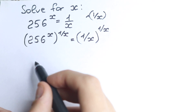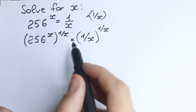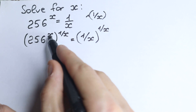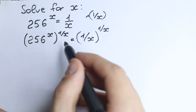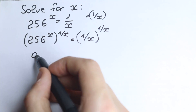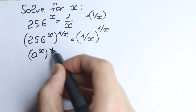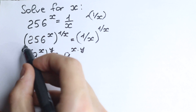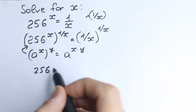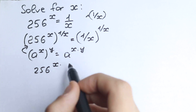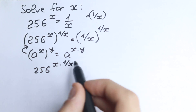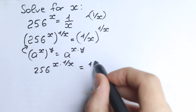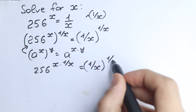Nothing changed because we raised both sides equally, but it's really important — take a look closely. We have a complicated expression because we have x raised to the power 1 over x. If you know the rule: a to the power x, raised to the power y, equals a to the power x times y — we apply that rule here. So we have 256 to the power x times 1 over x, equal to 1 over x to the power 1 over x.